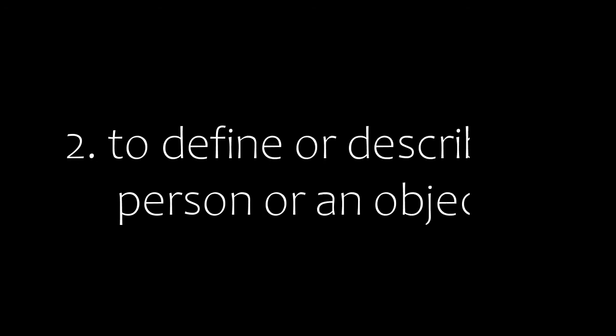Second, we use 'A' and 'AN' to define or describe a person or an object. For example: an engineer, a mobile phone, a girl, an imported watch, etc.